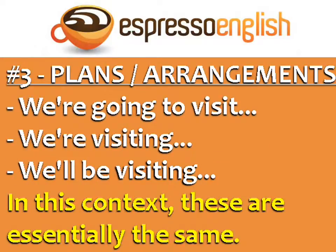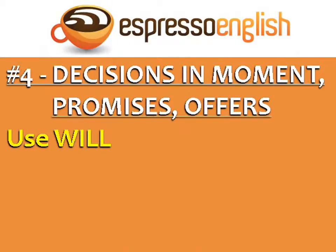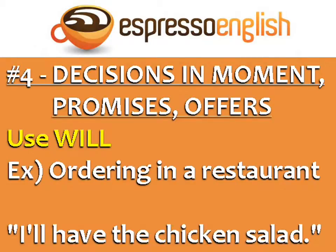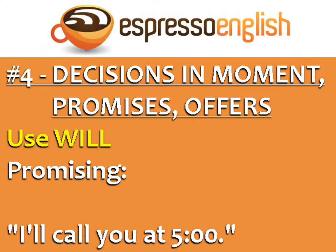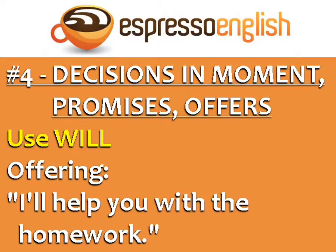These three structures — 'We're going to visit,' 'We're visiting,' and 'We'll be visiting' — in this context are essentially the same. For decisions in the moment, promises, and offers, use will. An example of a decision in the moment is ordering in a restaurant: 'I'll have the chicken salad.' Use will for promising: 'I'll call you at five o'clock.' Use will for offering: 'I'll help you with the homework.'